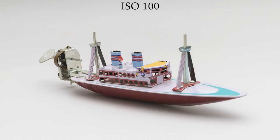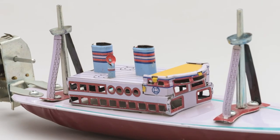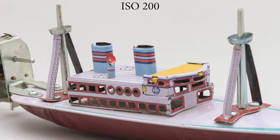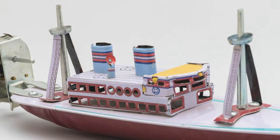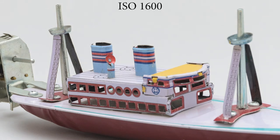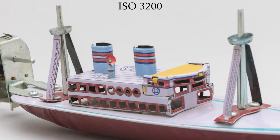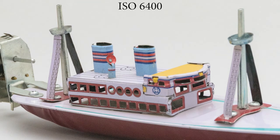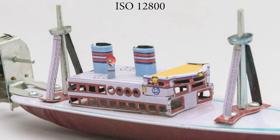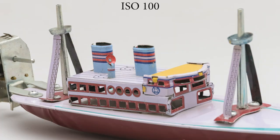Let's have a look at why we should avoid using high ISO by looking at this boat in more detail. Here we see a progression of images shot at different ISOs, increasing one stop at a time. Notice how the details of the boat become blurry, even though the image is always in focus. Comparing images taken with ISO 100 versus ISO 12800, it's quite obvious why we should avoid high ISOs.